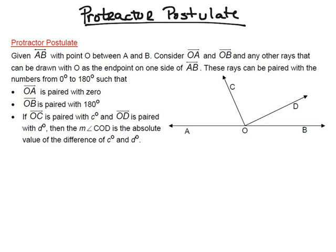In this video we'll be looking at the protractor postulate. It says that if we're given a line AB with a point O between A and B, consider OA and OB and any other ray drawn with O at the endpoint on one side of line AB. These rays can be paired with a number from zero degrees to 180 degrees such that ray OA is paired with zero and ray OB is paired with 180 degrees.